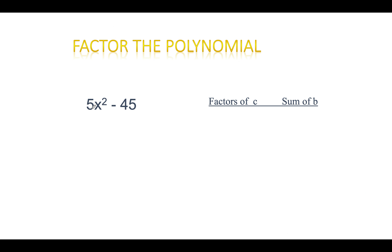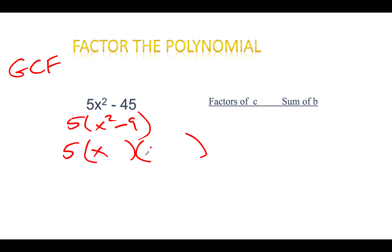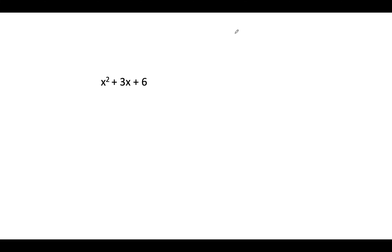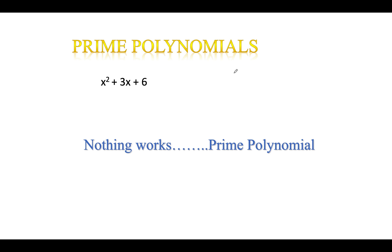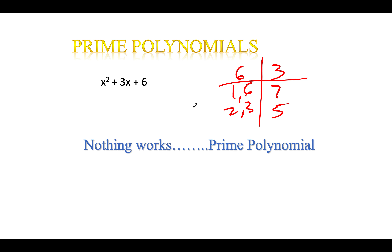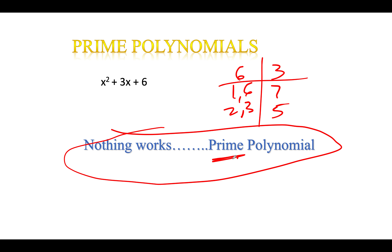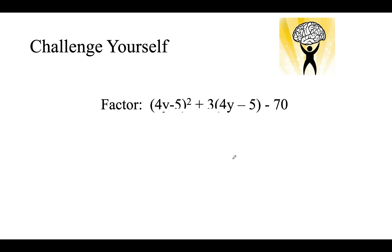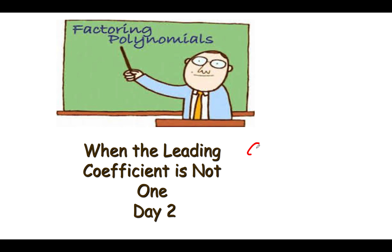Always check: can I take out a greatest common factor first? Take out a 5, leaving x squared minus 9. That's a clear difference of two squares. What did I square to get x squared? x. What did I square to get 9? 3. So the result is 5(x + 3)(x minus 3). You can distribute back to check. Sometimes nothing works — for example, factors of 6 that add to 3: 1 and 6 adds to 7, 2 and 3 adds to 5 — nothing works. We call that a prime polynomial, like a prime number that only has factors of 1 and itself.